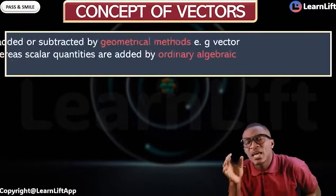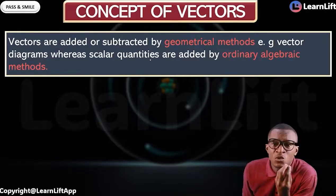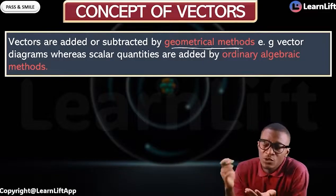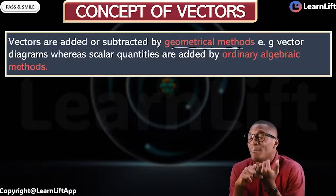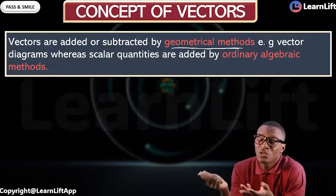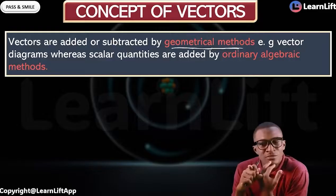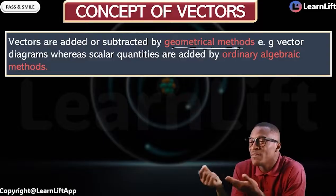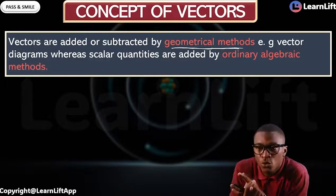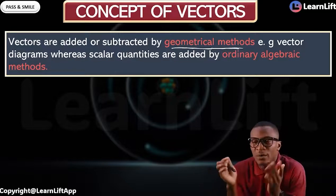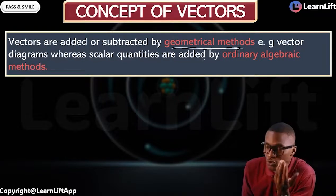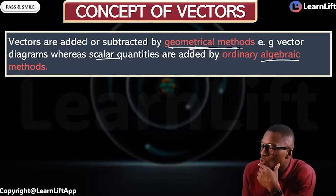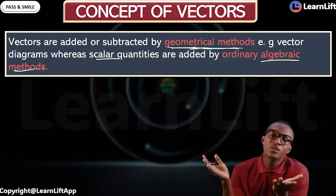Vectors can be added or subtracted by geometrical method. There are many geometrical methods — we're going to talk about Pythagoras' theorem, the cosine rule: a squared plus b squared plus or minus 2ab cosine theta, and we can also use the sine rule or vector resolution. All those things I mentioned fall under geometric method, while scalar quantities are added by ordinary algebraic method.